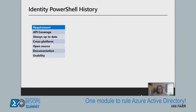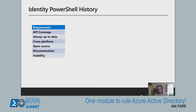In the identity PowerShell space we have four modules for interacting with Azure AD: MS Online, Azure AD PowerShell, Azure AD PowerShell Preview, and the most recent — the Microsoft Graph PowerShell SDK, or Graph PowerShell for short. We also have the Windows Server AD module and a bunch of other non-official modules published under the Microsoft GitHub organization, which I'll talk about more later.